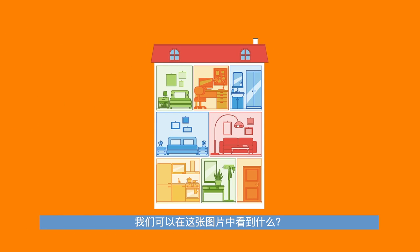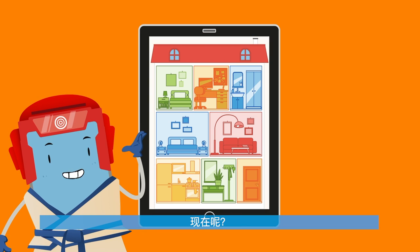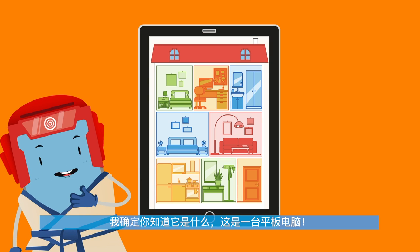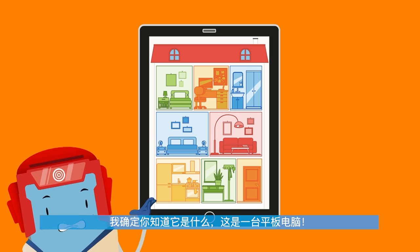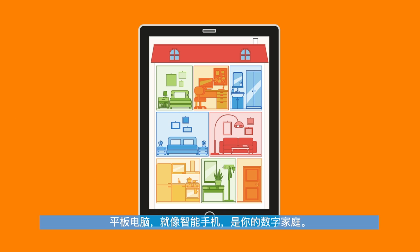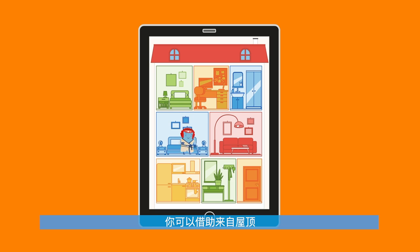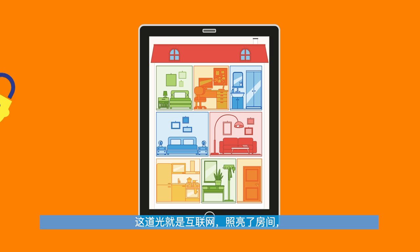What can we see in this image? The answer is really simple — it's a house! What about now? I'm sure you know what it is. It's a tablet. A tablet, like a smartphone, is your digital home. Inside your house, you can move around thanks to light that comes in from the roof and the windows or from artificial light.